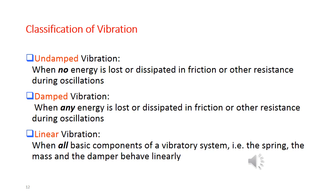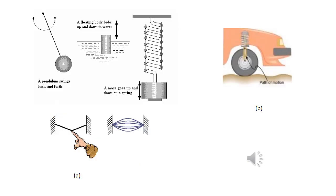Vibration can be classified in many categories. Based on energy: undamped vibration — where no damper is used and no energy is dissipated; damped vibration — where energy is lost due to damping; and linear vibration — where all basic components (spring and mass) behave linearly.